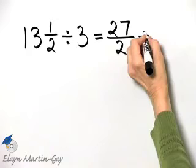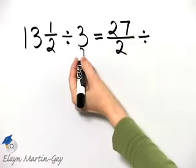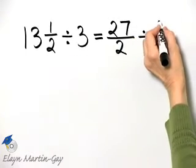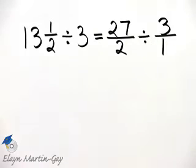Now I'm going to keep this division for a moment and simply write three as a fraction, which is three over one.